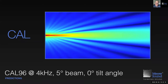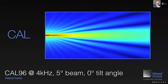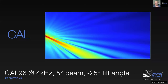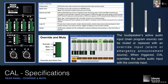Here you see such a beam — Preset 1 at 4kHz: a 5-degree beam, straight ahead, zero-degree tilt angle. That is a beautifully defined beam, regardless of whether it's pointing dead ahead or being steered downward at a 25-degree angle. This is very, very well-behaved behavior.